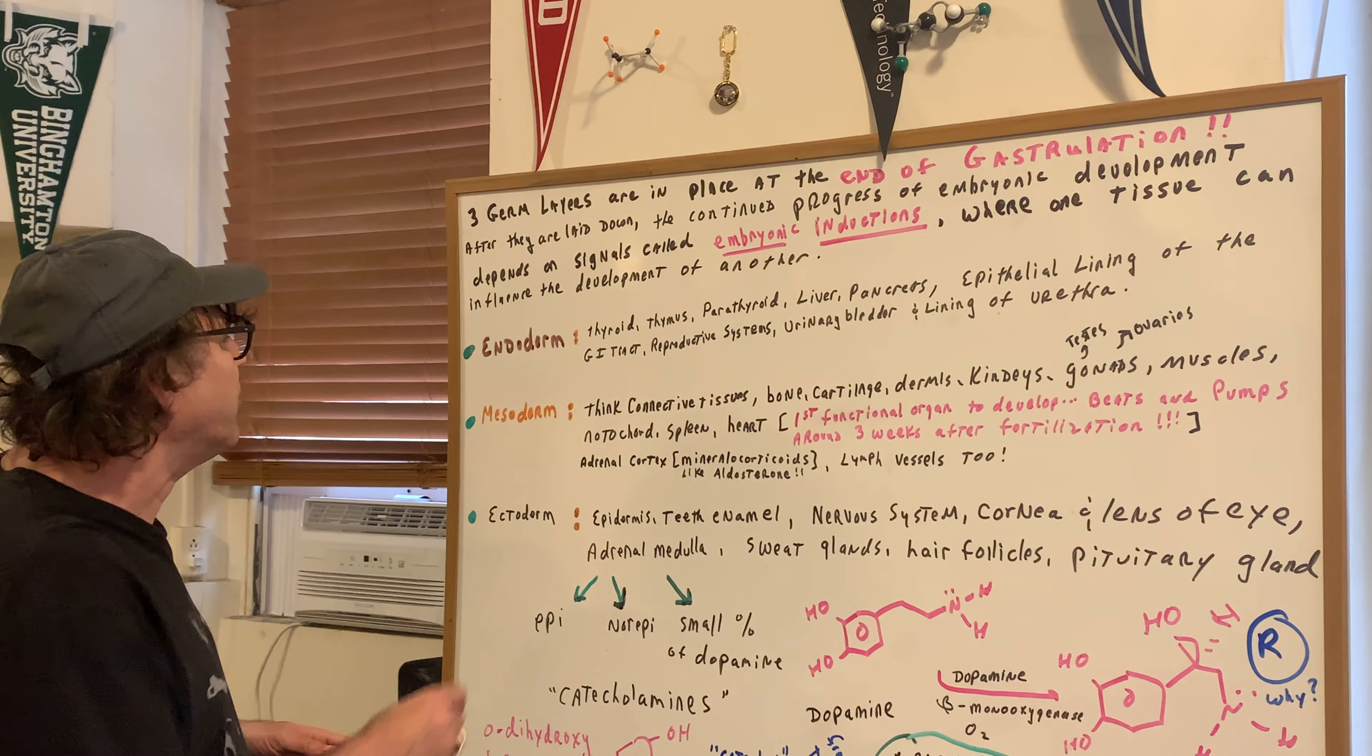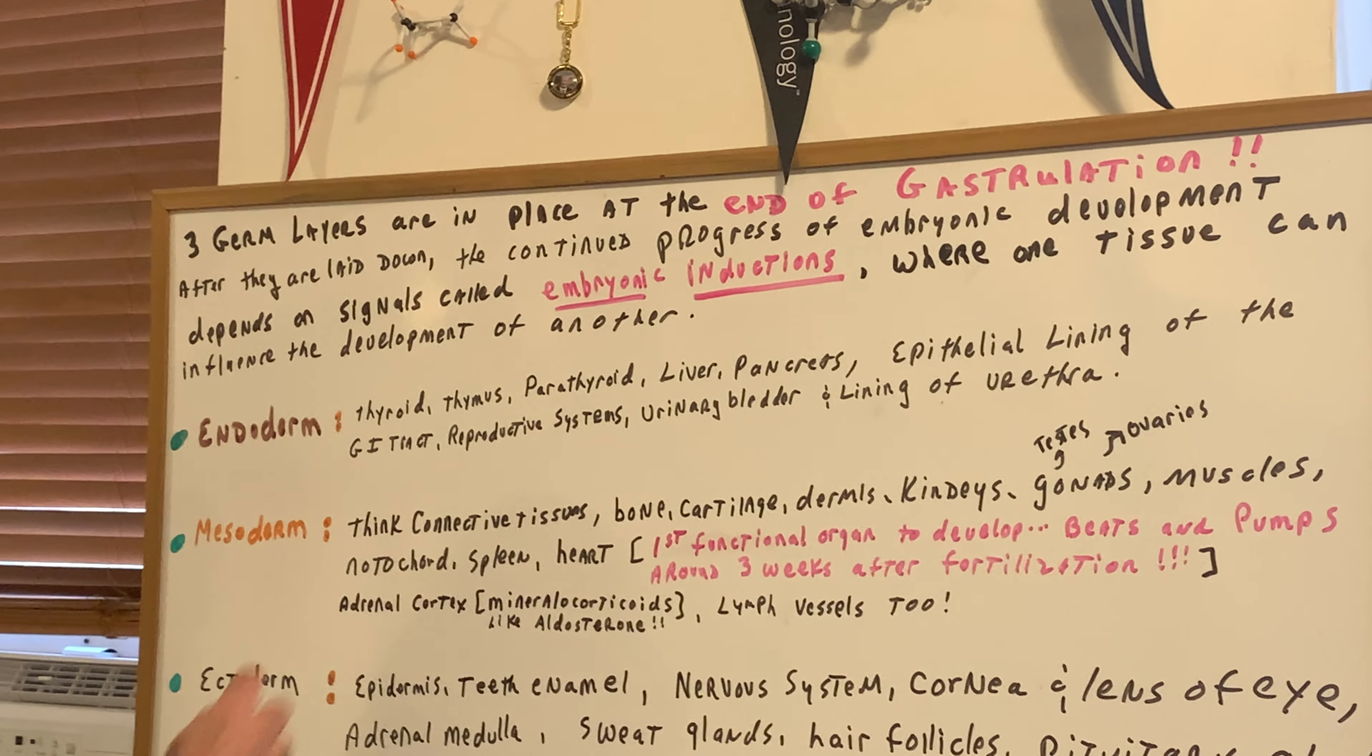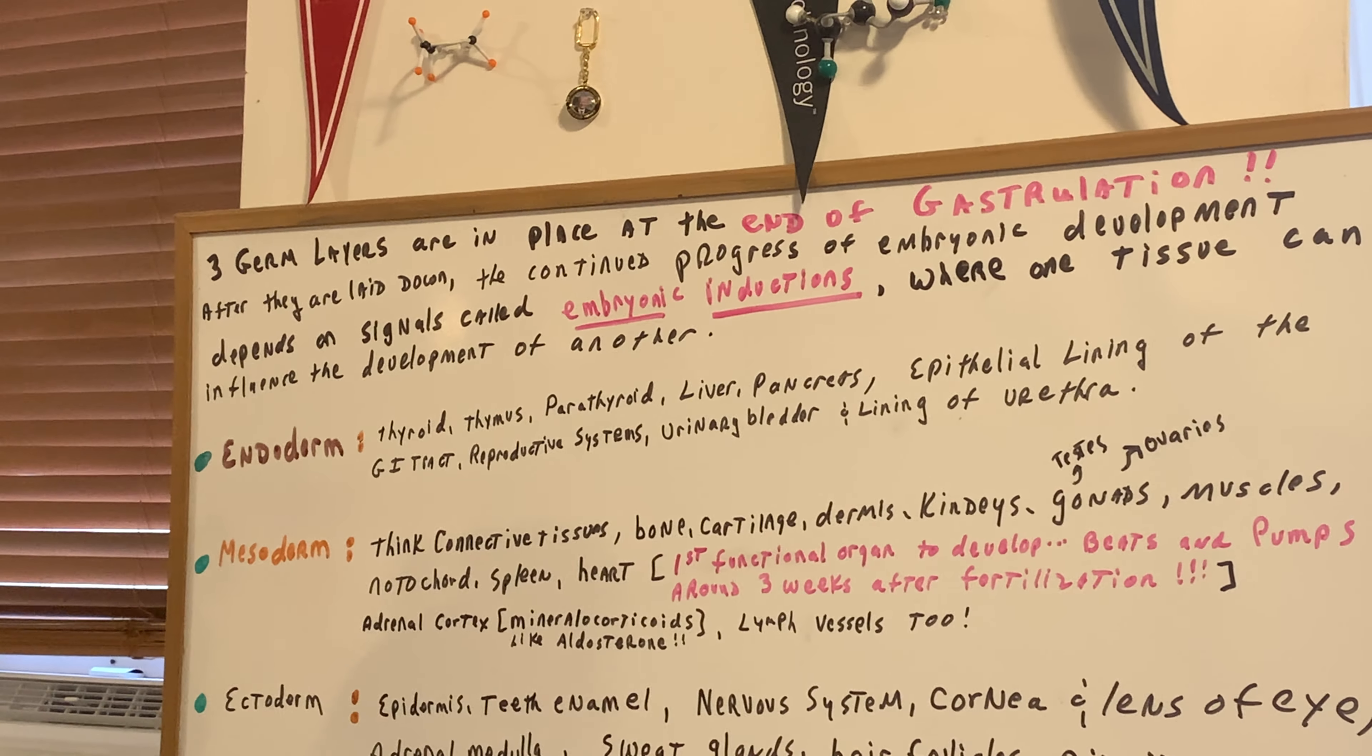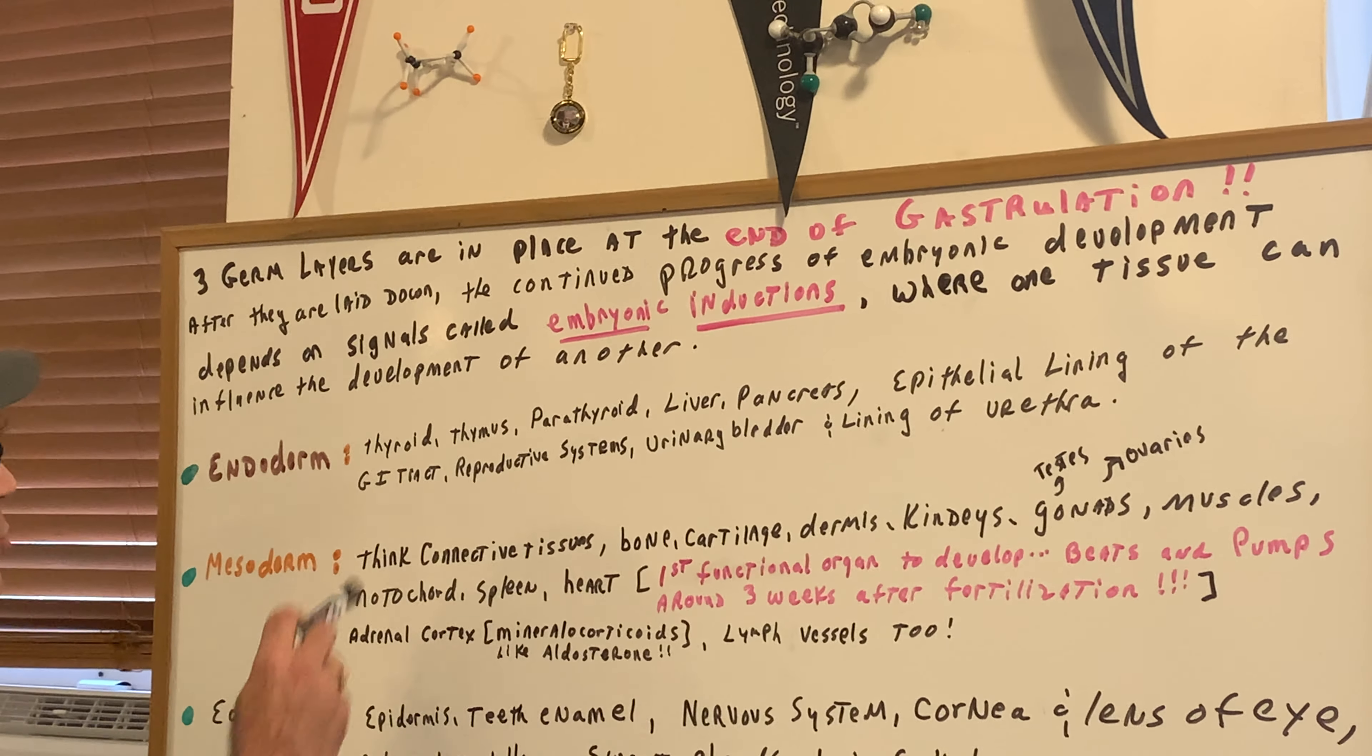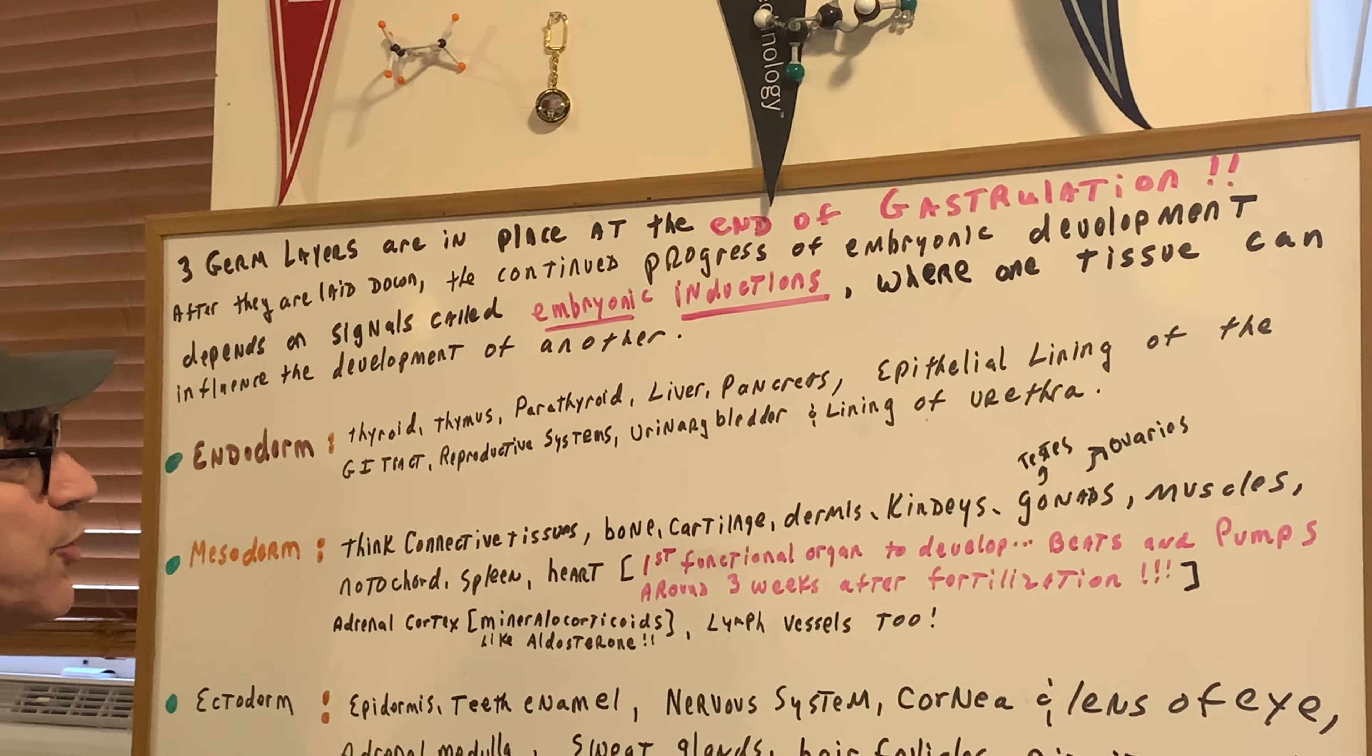The endoderm gives rise to thyroid, thymus, parathyroid, liver, pancreas, and the epithelial lining of the GI tract, reproductive systems, urinary bladder, and lining of the urethra.